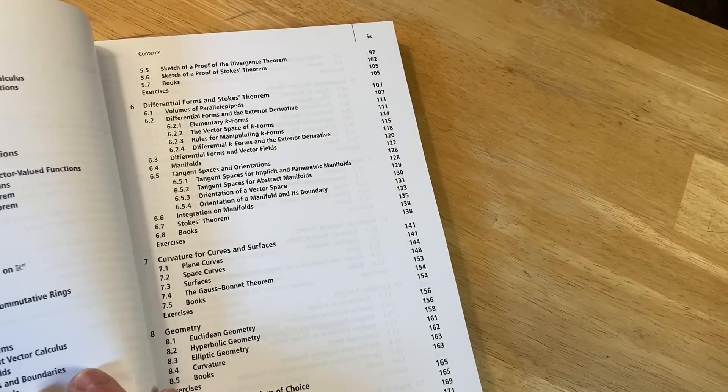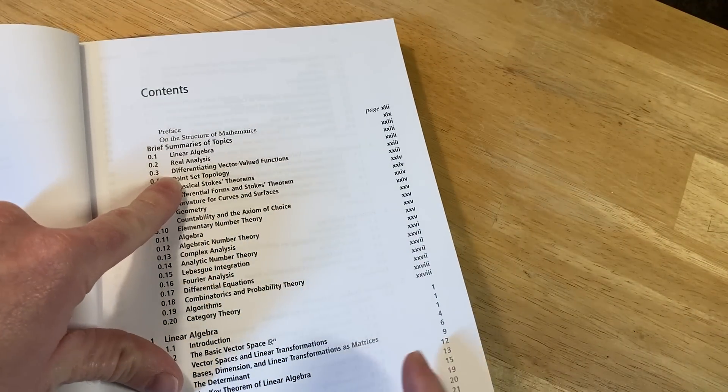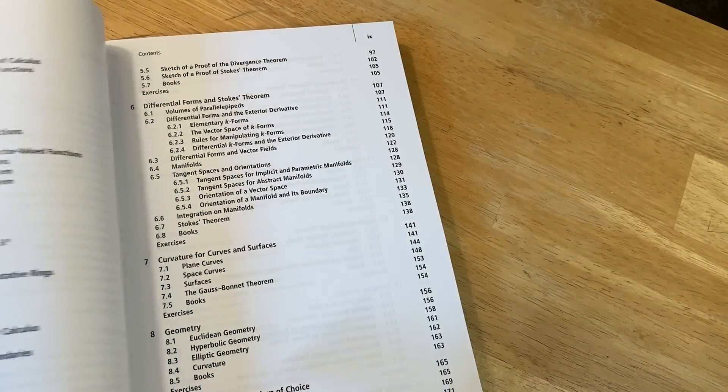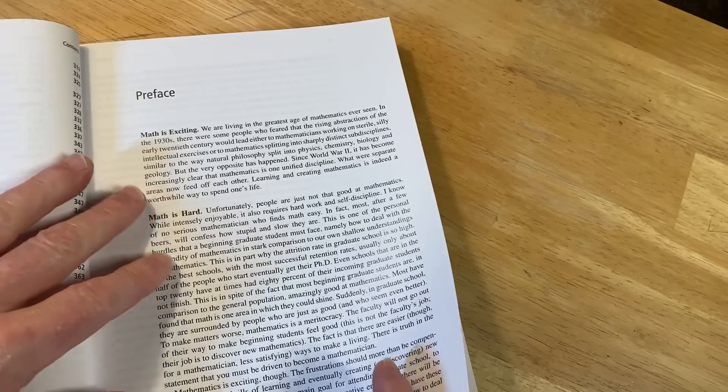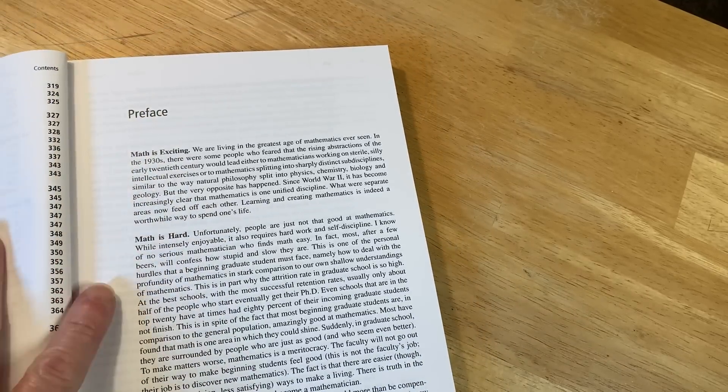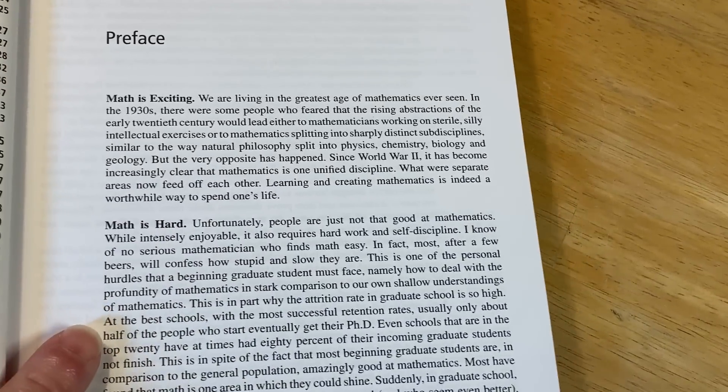So then it basically touches on all of these things. So linear algebra, and then it goes to real analysis. Three is differentiating vector valued functions. It just goes through each one, and then there's a nice preface. Let's look at the preface. It's a very well-written book. It's a fun book.